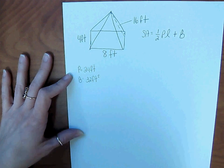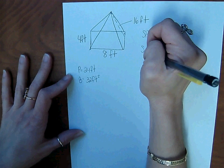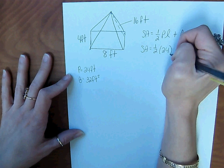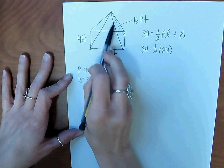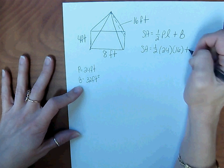So now that we have everything we need, we can plug into our formula. Surface area equals one-half, 24, times the slant height, which was given to us right here, 16, plus big B, 32.